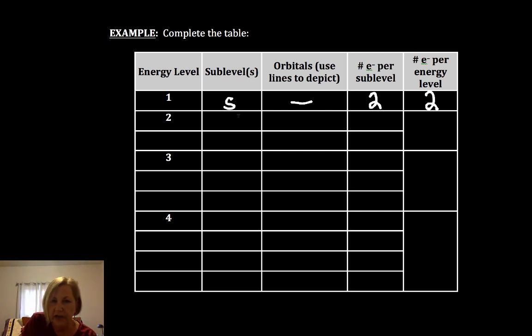If we look at energy level two, we can have an S and a P. The S has one orbital, each orbital holds two electrons. The P has three orbitals, each holds two, for a total of six electrons in that sublevel, eight in the energy level.